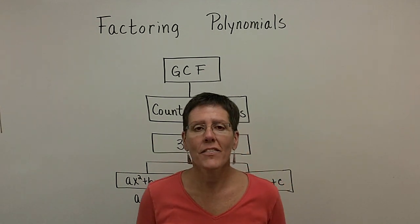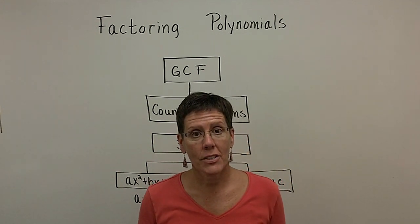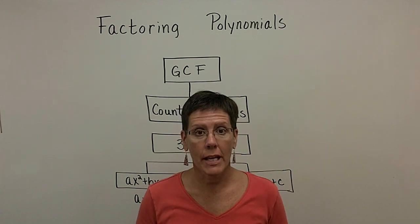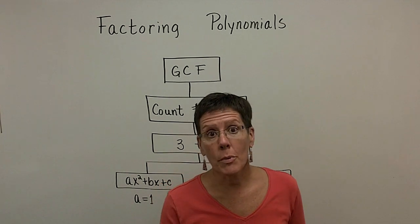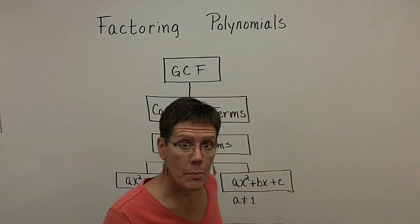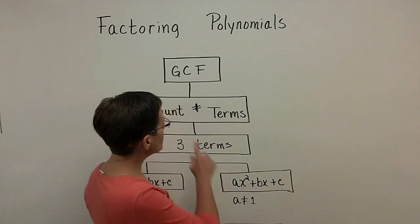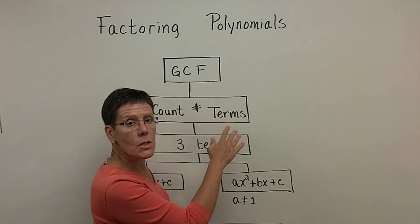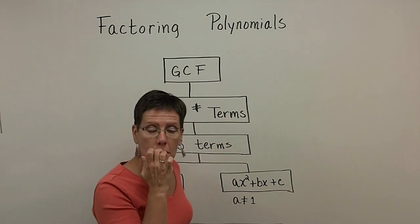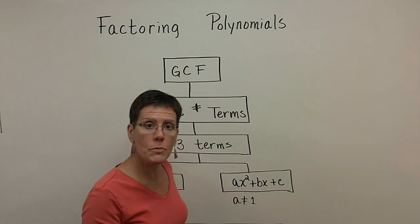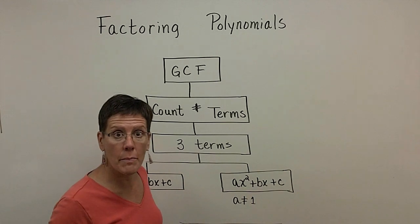As we continue our discussion on factoring polynomials, this particular segment is going to look at trinomials, or polynomials in three terms. Remember, your first step is to always take the greatest common factor out first. Then you'll count the number of terms. Our previous segment covered polynomials with four terms; we're going to focus on three terms now, and there are two scenarios that come about.